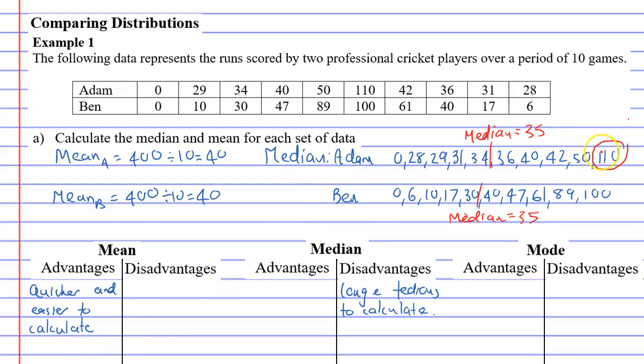This 110 has distorted the mean and made it become bigger, a bit bigger. It's become 40 instead of being around the 35 mark. So for disadvantages we'll say that the outlier distorts the mean. And the advantage for the median is that it ignores outliers.